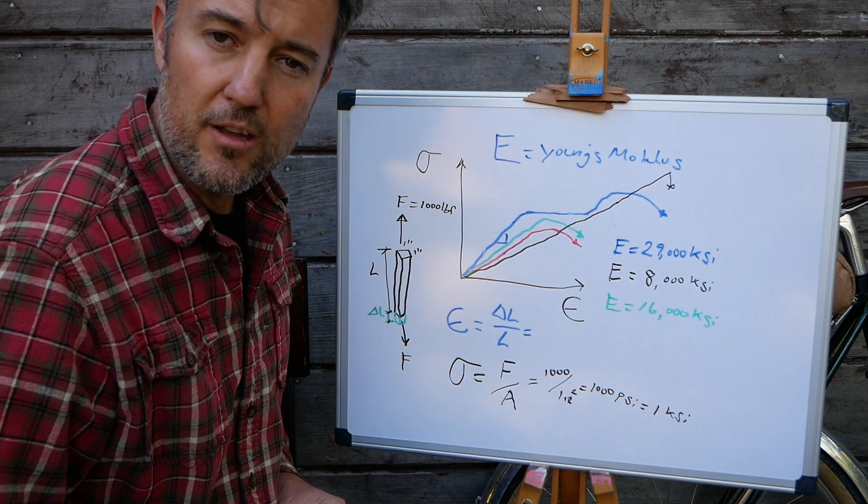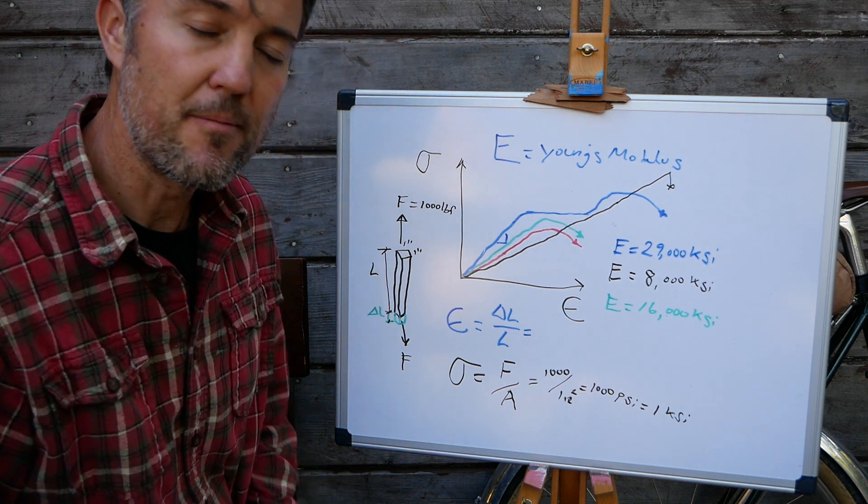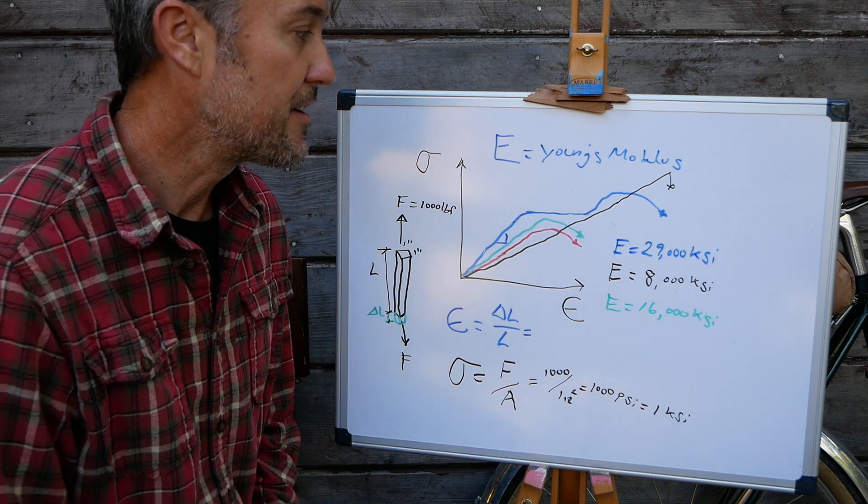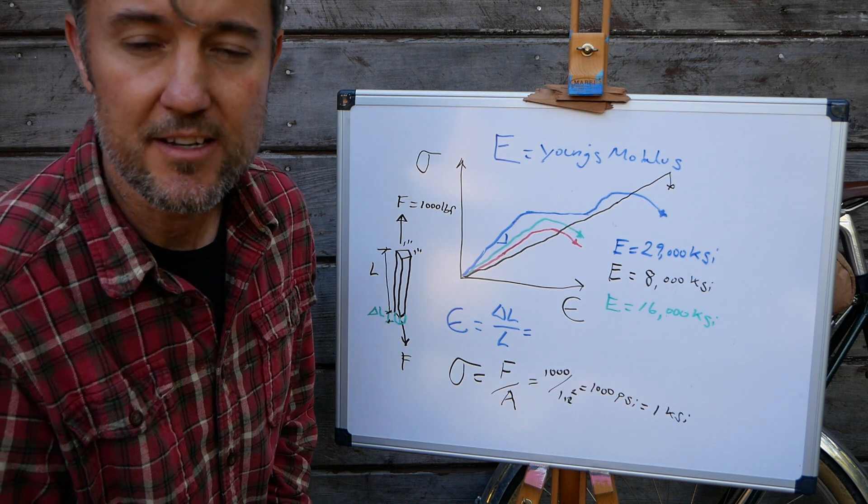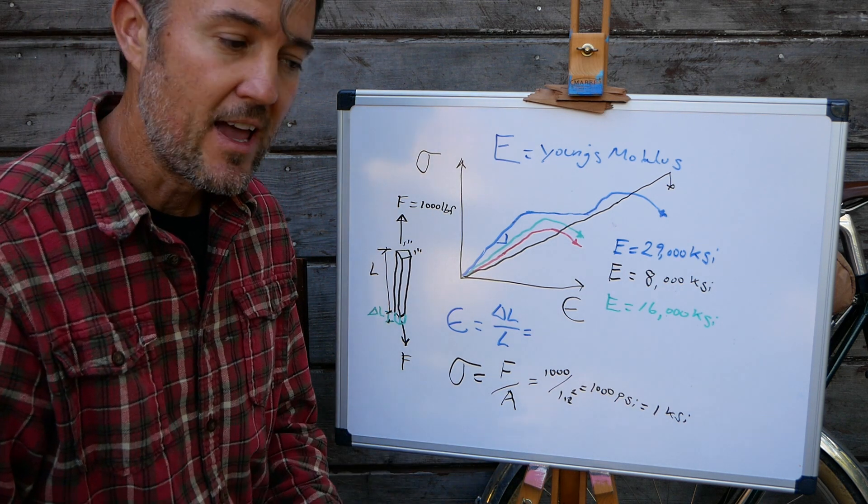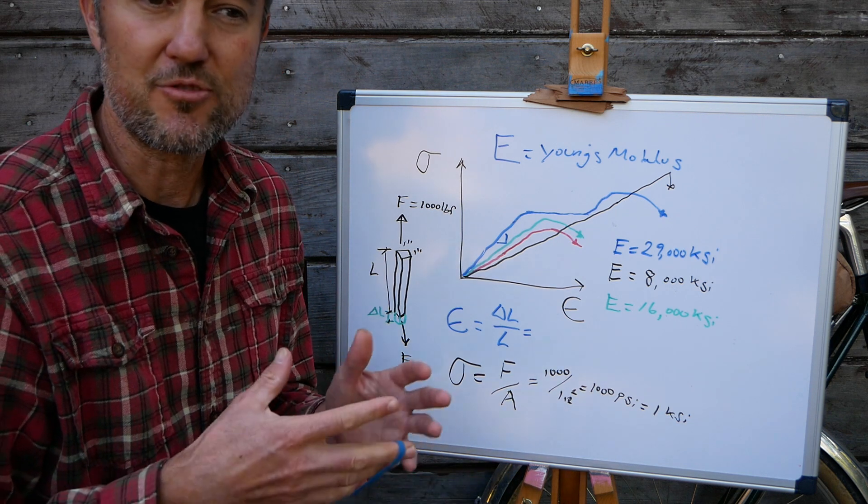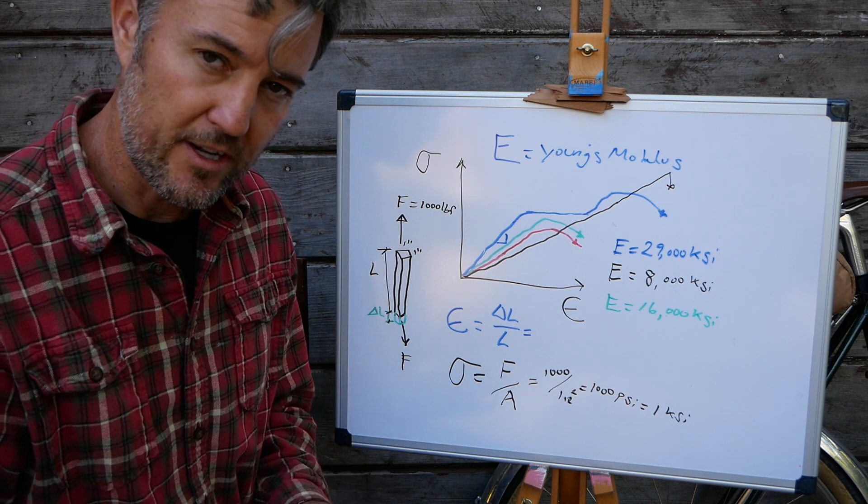Which is why for most bicycle designs it doesn't become a problem that it doesn't have a yield plateau because it is so strong that generally a bicycle designer can design within those parameters and make sure that the bike is not so weak that it will just break suddenly. But if it does break, it's going to break without warning.